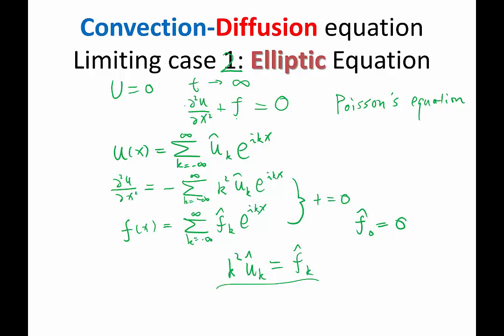And then it also tells me that for the other case, f̂ can be arbitrary value. And then I can have a solution: û_k is equal to f̂_k divided by k². Right. So it takes the Fourier components of f and divides it by k², divided by small numbers for small k, by a big number for big k.